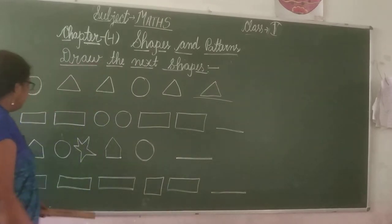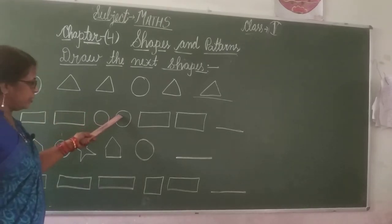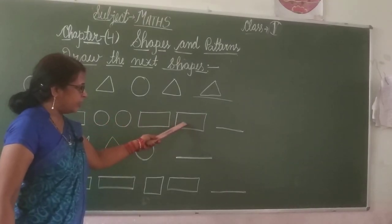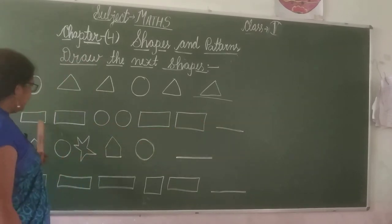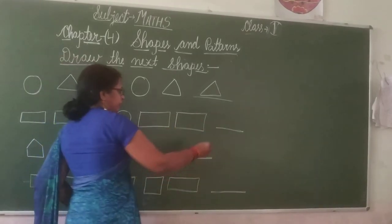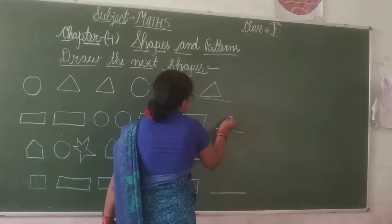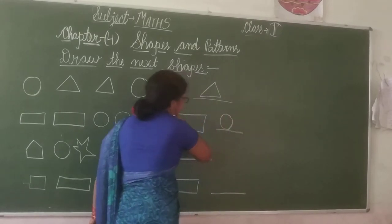My second question. Rectangle, two rectangles, two circles, two rectangles. And next shape: rectangle, circle, rectangle. Give me the answer. Yes, the next shape is circle.